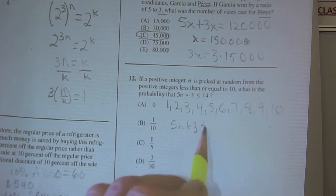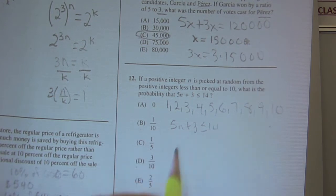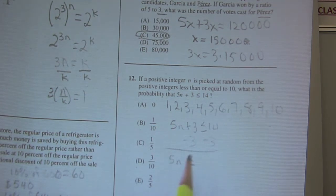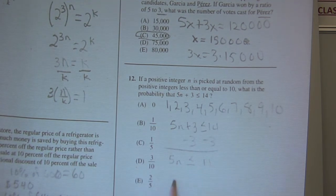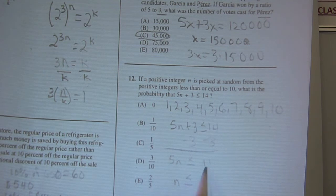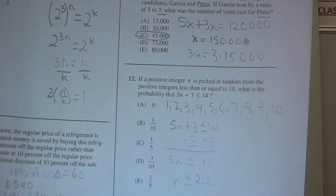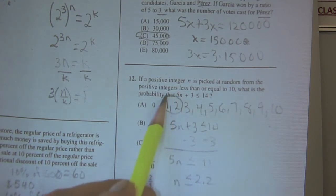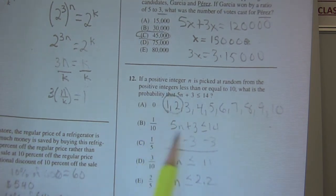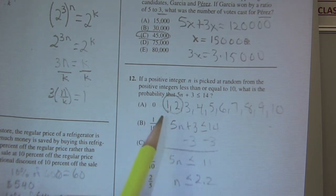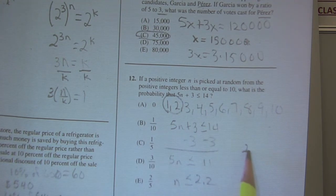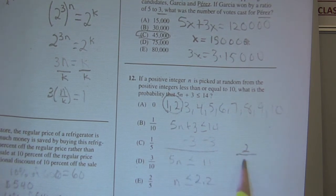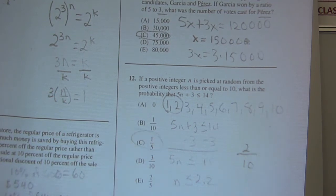5n plus 3 less than or equal to 14, subtract 3 on both sides, and I get 5n is less than or equal to 11, so n is less than or equal to, and I divide 11 by 5, I get 2.2. So what integers satisfy that? The only integers that satisfy that are these two, and there are two integers. Remember, number favorable outcomes, I see two of them that are favorable, and there were 10 total, so that reduces to 1 fifth, choice C.